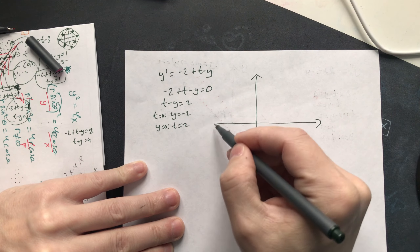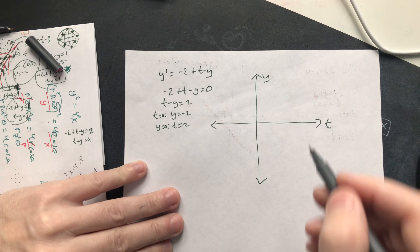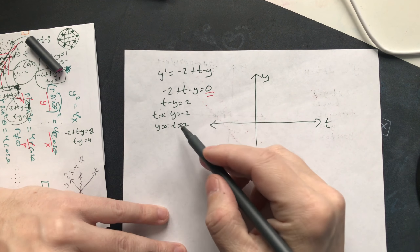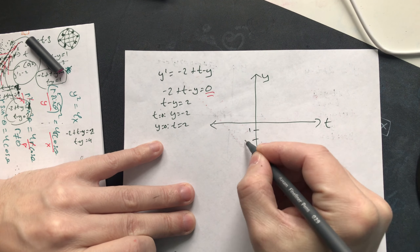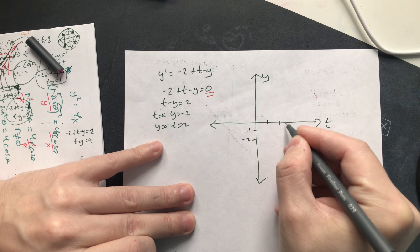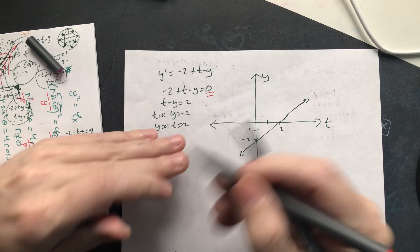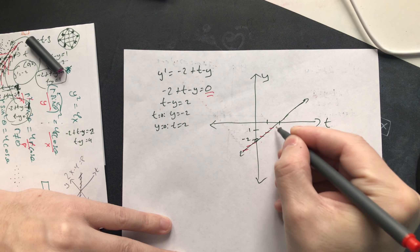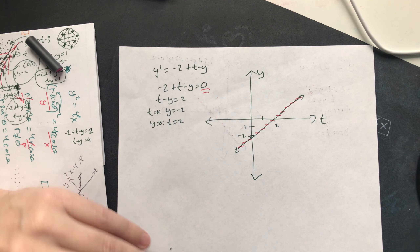In the t-y system, the line t - y = 2 passes through y = -2 and t = 2. Along this line the slope is always equal to 0, which means when you draw the line segments they should all be horizontal — flat along the line.